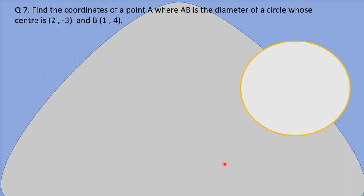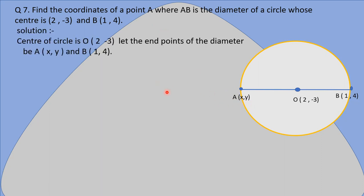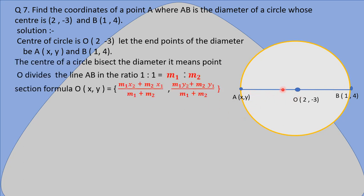Question number 7: find the coordinates of point A, where AB is the diameter of a circle whose center is (2, -3) and B is (1, 4). The center of the circle is O(2, -3), the diameter is AB, we need to find point A(x, y), and point B is given as (1, 4). Since OA = OB = radius, the center divides the diameter equally.